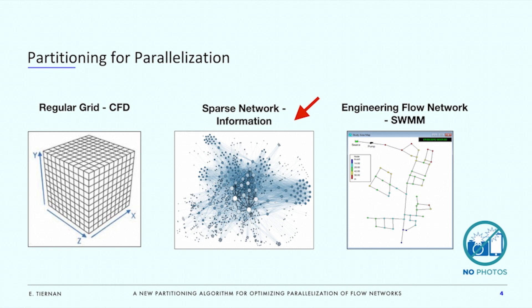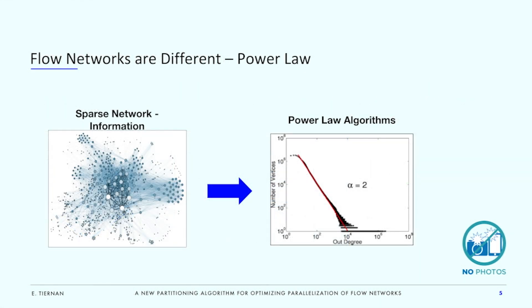Engineering flow networks — think water drainage or water distribution — clearly look more like an information network than a CFD grid. They have sparse and irregular adjacency matrices that necessitate careful partitioning. But we will see that there are characteristics of flow networks that make them resistant to partitioning by the same methods useful for information networks. So flow networks are different.